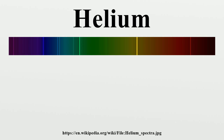The first evidence of helium was observed on August 18, 1868 as a bright yellow line with a wavelength of 587.49 nm in the spectrum of the chromosphere of the Sun. The line was detected by French astronomer Jules Janssen during a total solar eclipse in Guntur, India. This line was initially assumed to be sodium.